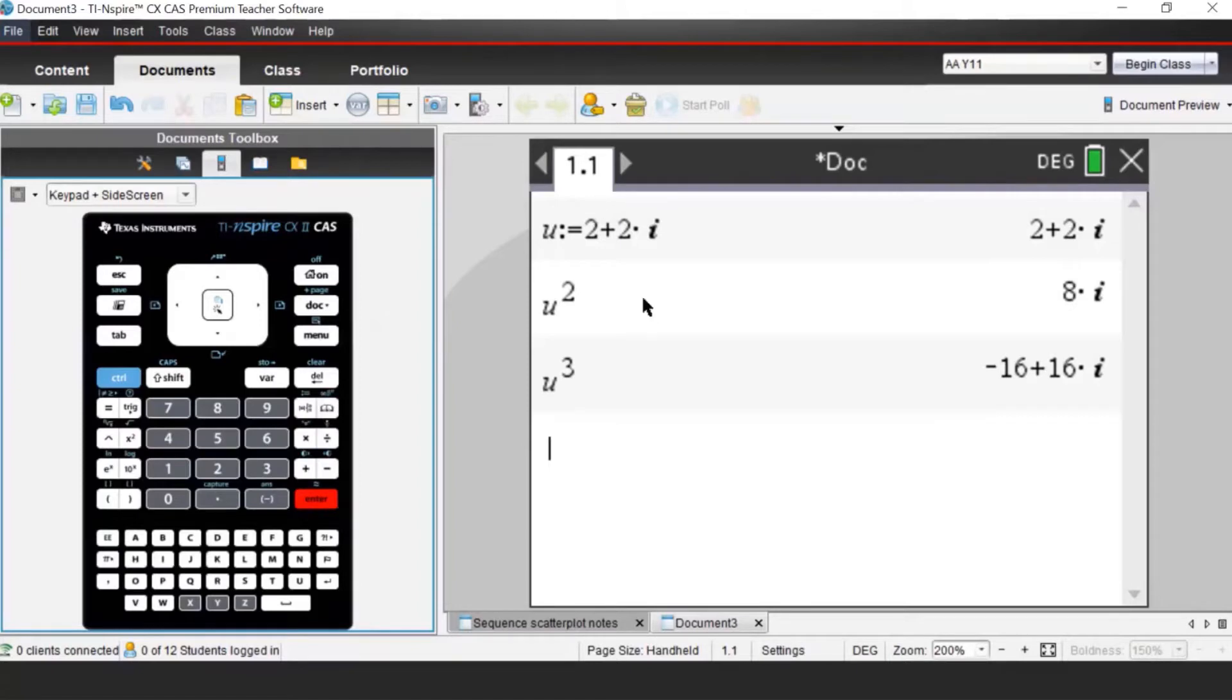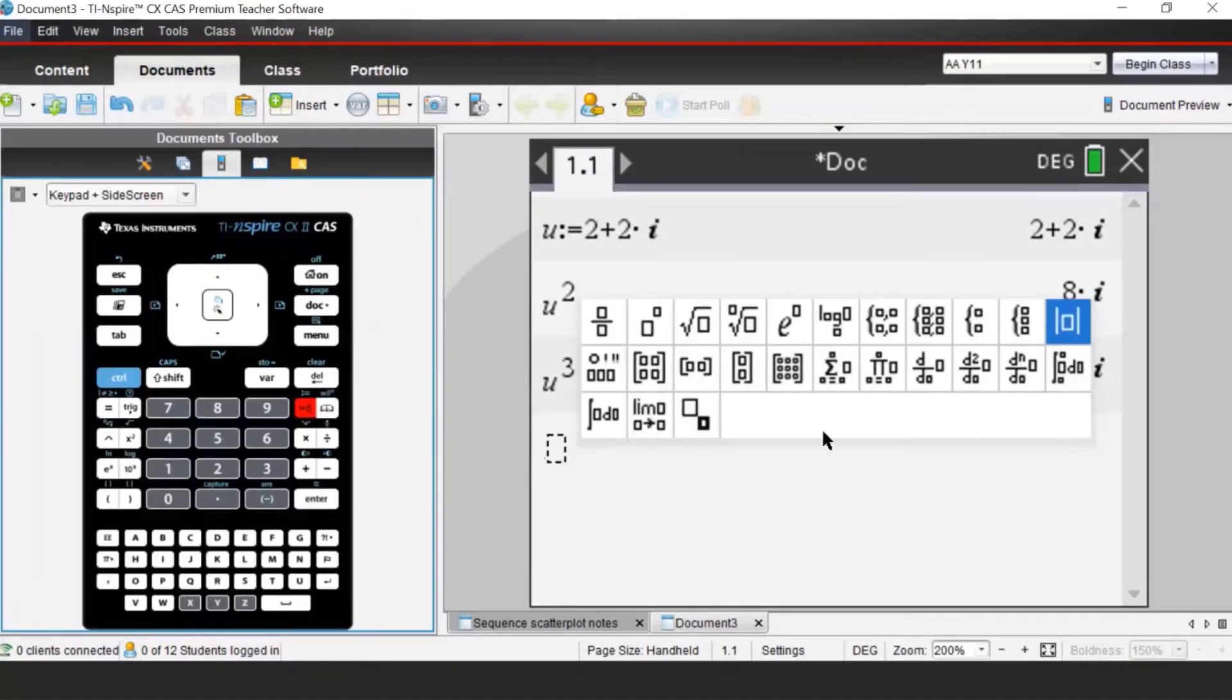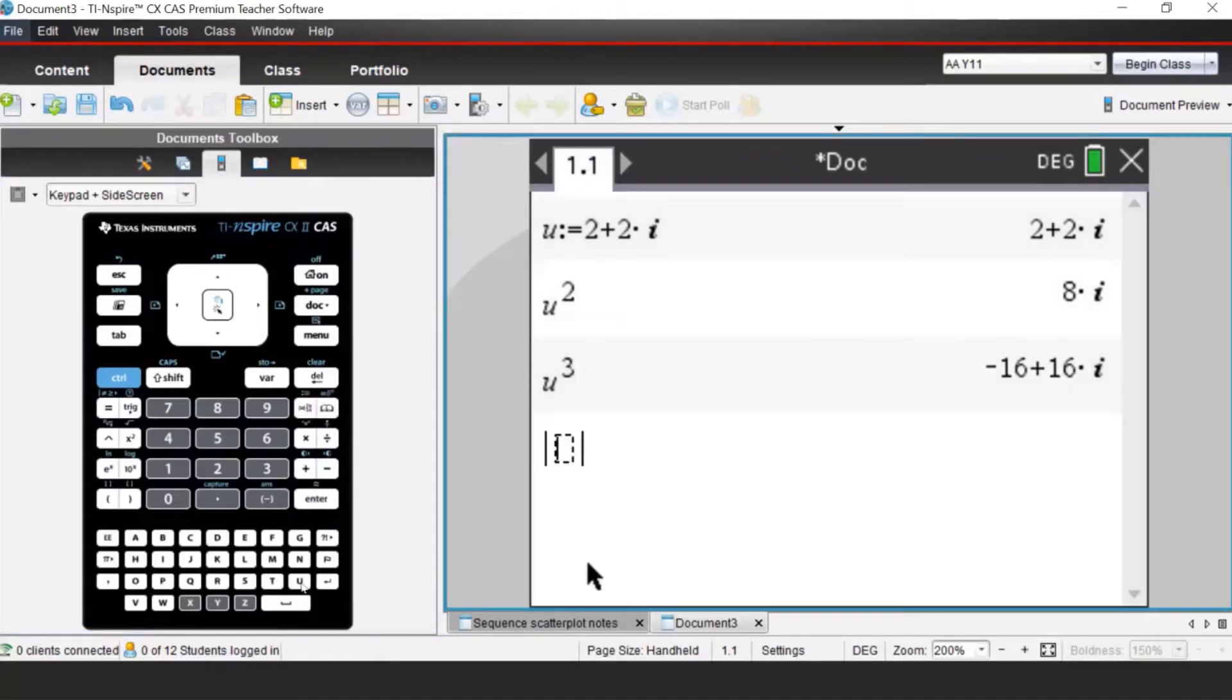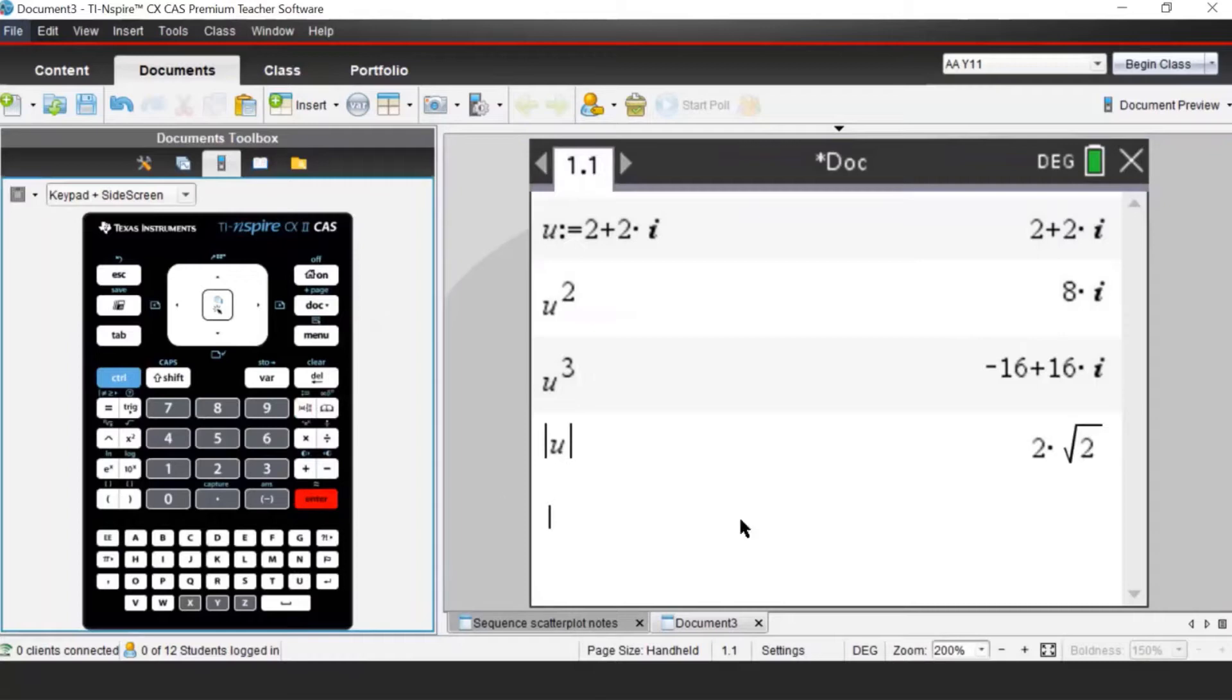This complex number is in Cartesian form, so we can have the real part and the imaginary part and plot those coordinates on the argand diagram. There is another way of determining the position in the complex plane by finding the distance from the origin, called modulus. Modulus U is 2 square root 2.